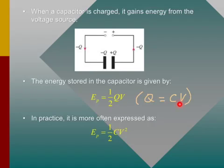So the equation can be changed into this form: one-half CV squared. And that looks very much like one-half MV squared.